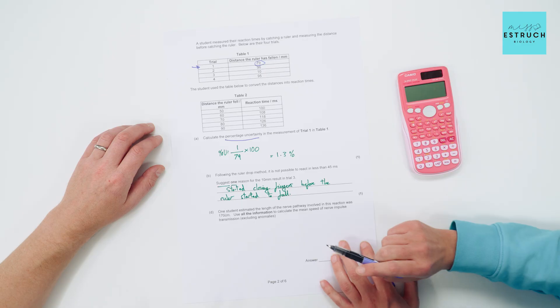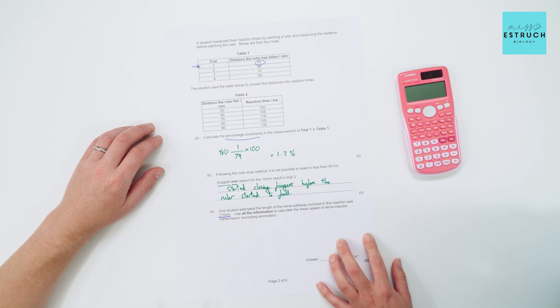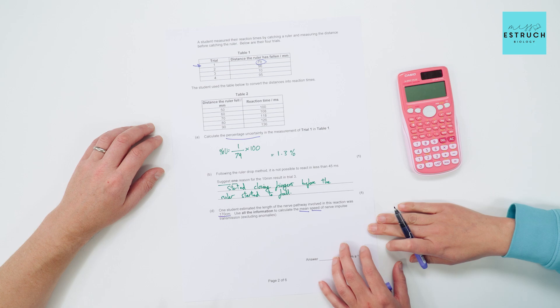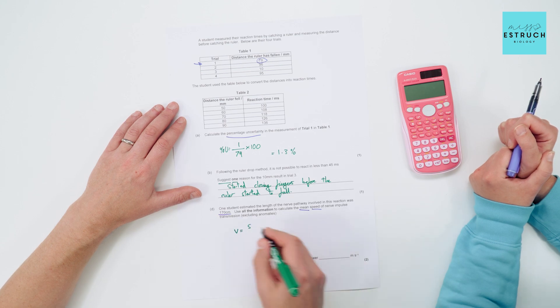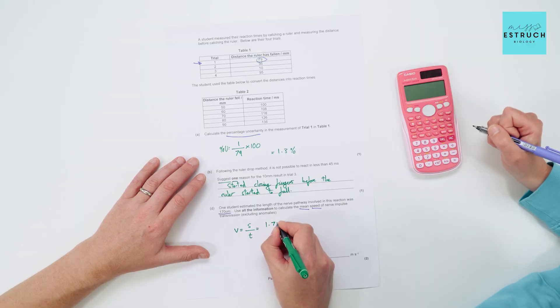For the final question: one student estimated the length of the nerve pathway involved in this reaction as 170 centimeters. Use all the information to calculate the mean speed of nerve impulse transmission in meters per second, excluding anomalies. Speed equals distance divided by time, so the distance is 170 centimeters, which we convert to standard units — 1.70 meters.